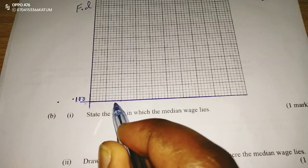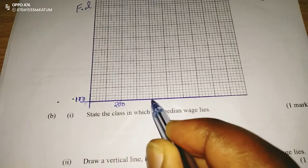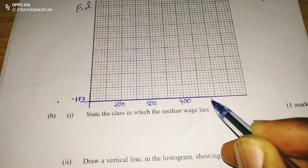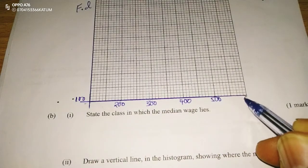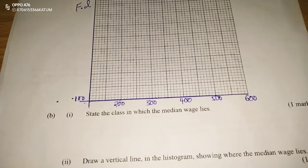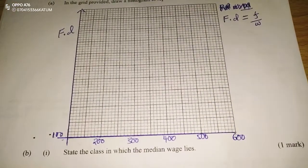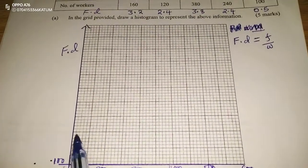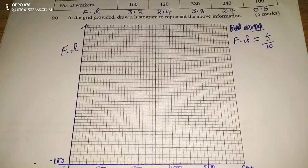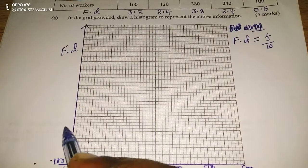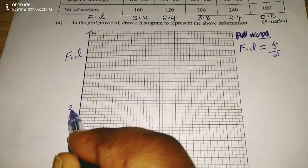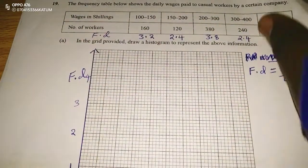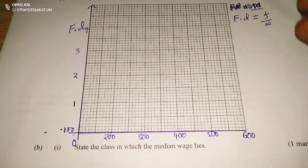The next mark becomes 200, then 300, then 400, then 500, and 600. For the frequency densities, we range from 0.5 up to 3.8, so we can set intervals of 1, 2, 3, and 4 on the vertical axis.